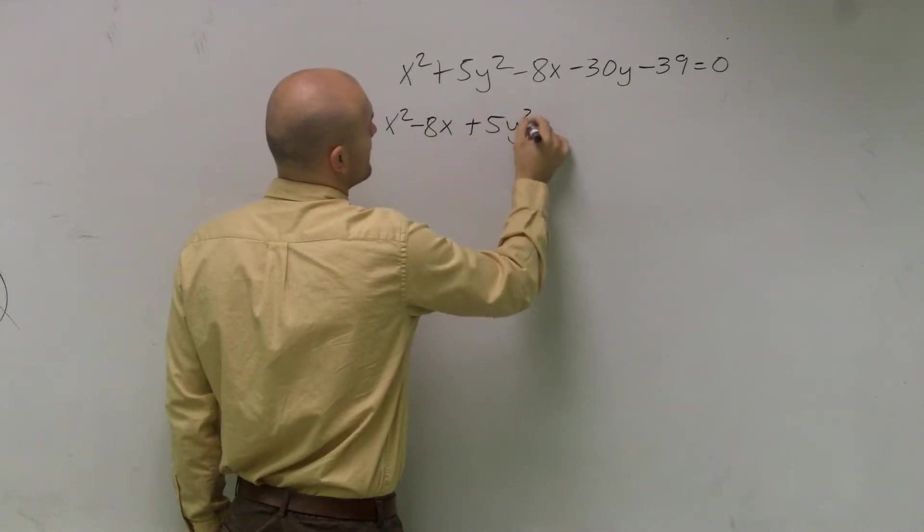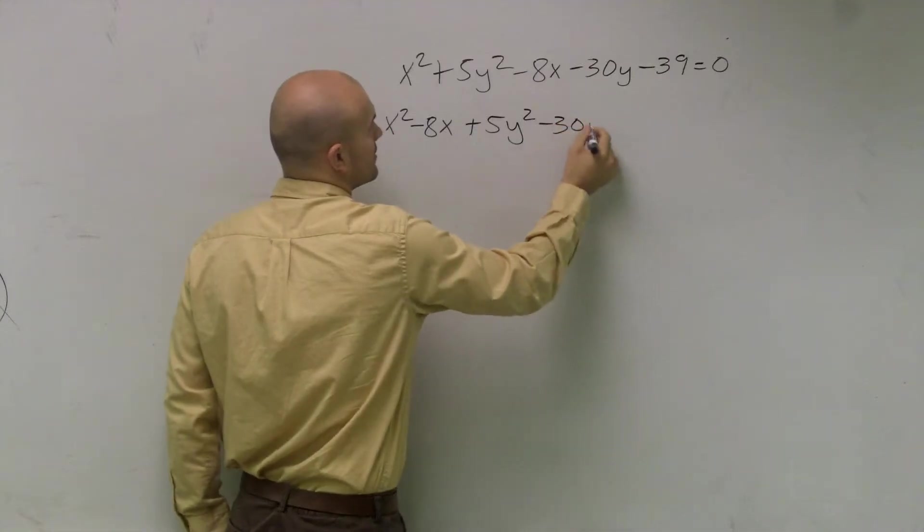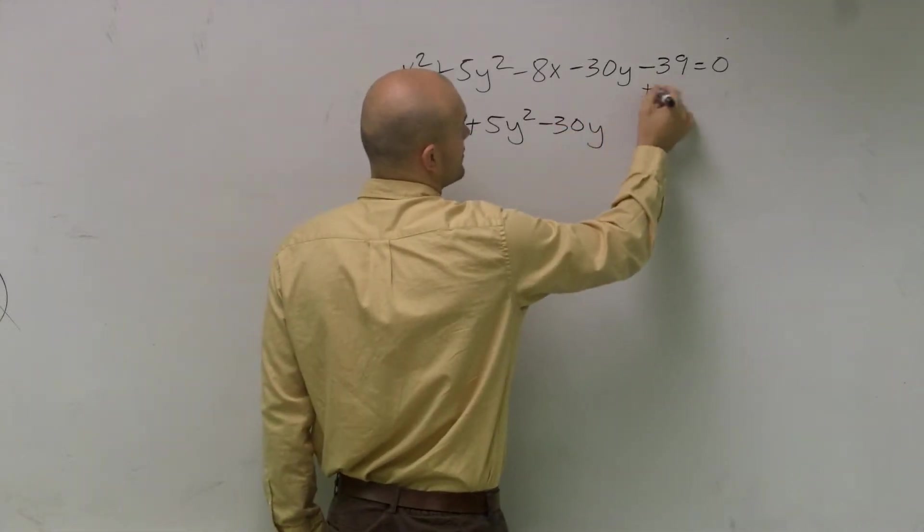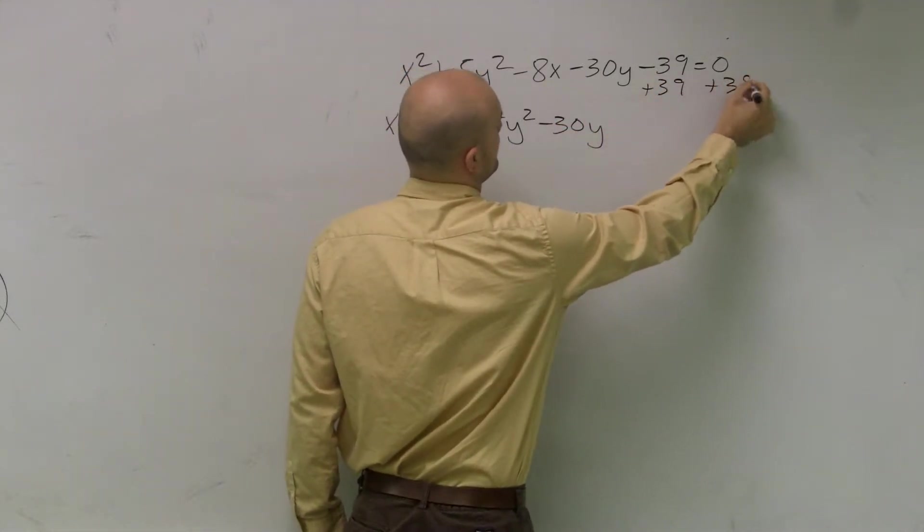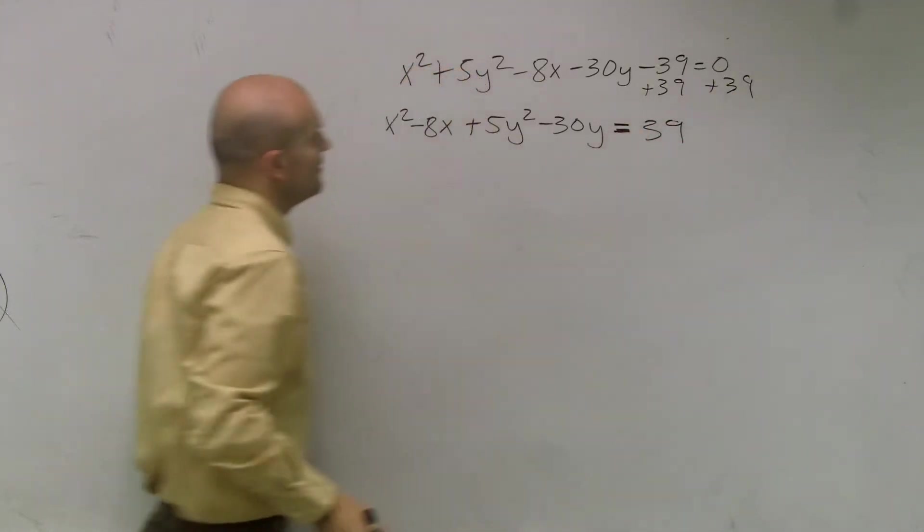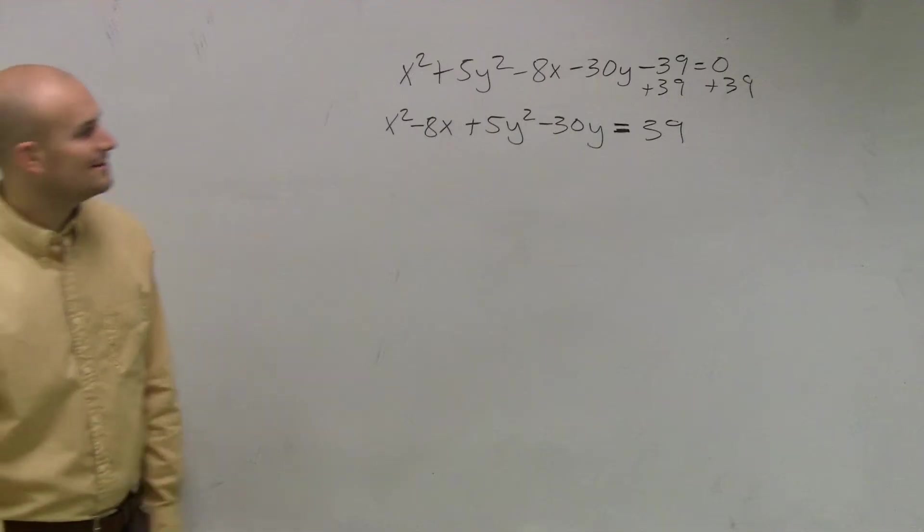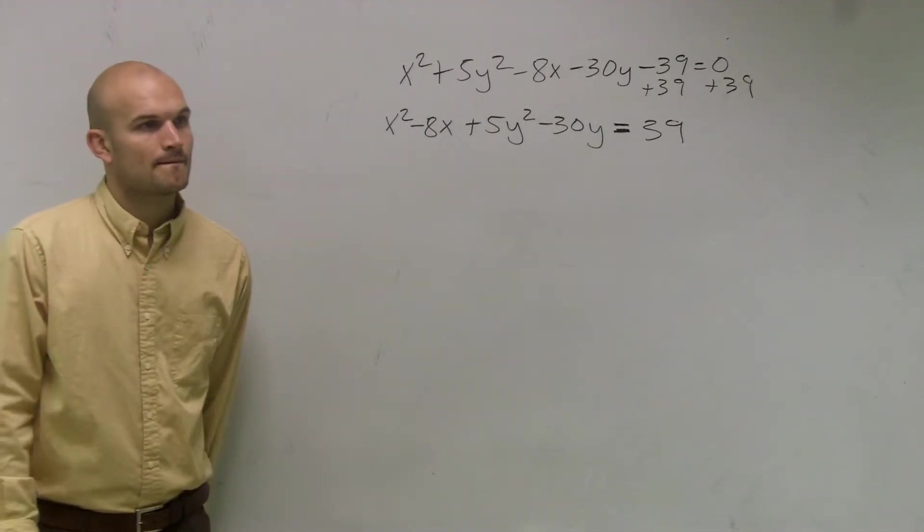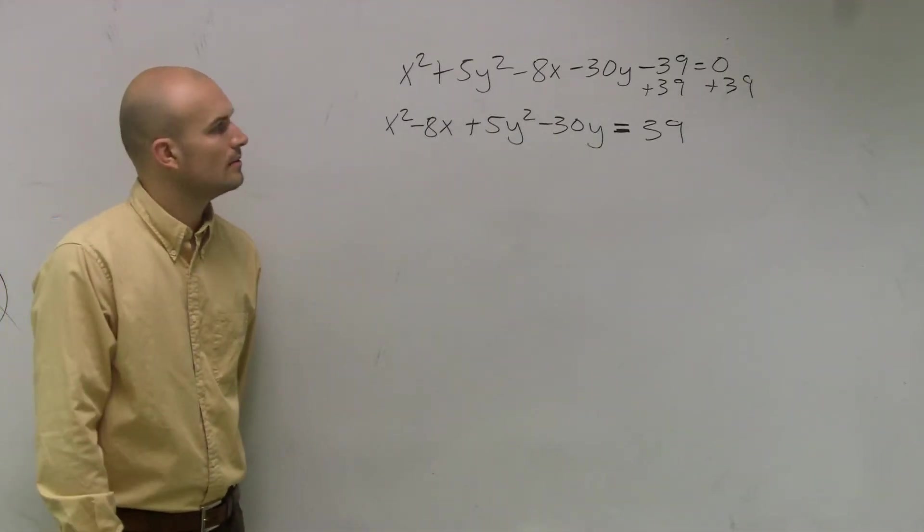So I'll regroup them, 5y squared minus 30y. And then I'm going to bring the 39 to the other side. Well, I think it's going to help us out. I think I was doing this, and then it was like confusing me, because I couldn't get to the solution. I had the 39.